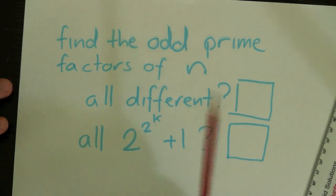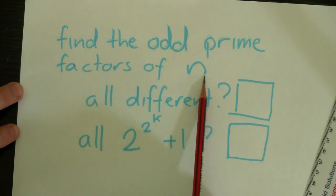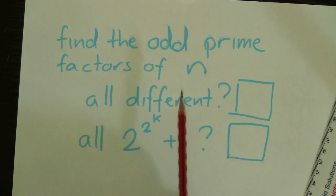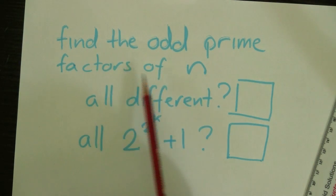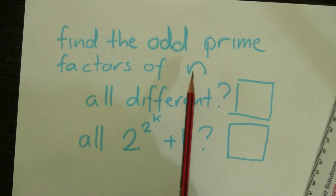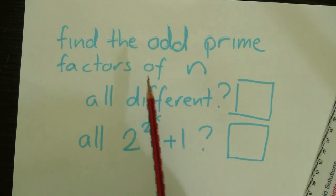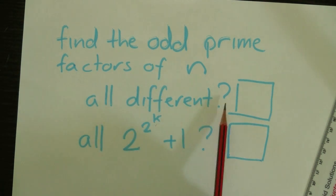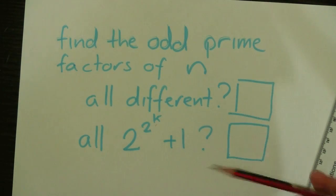If you've got a regular polygon with n sides, the way to tell if it can be made with a ruler and a compass is you find all the odd prime factors of n. Now 6 for the hexagon has only one odd prime factor, and that's 3. You ask if they're all different. Well, there's only one, so it's all different.